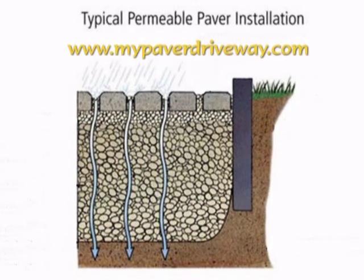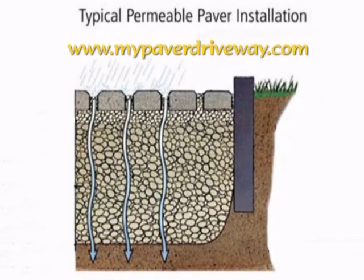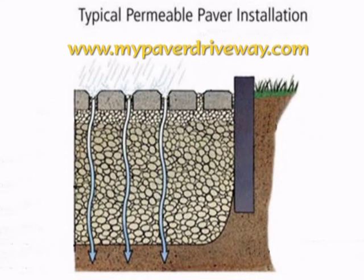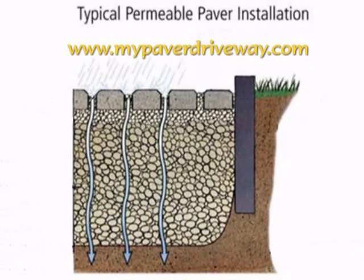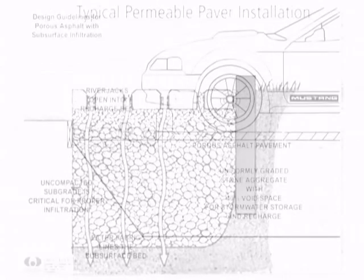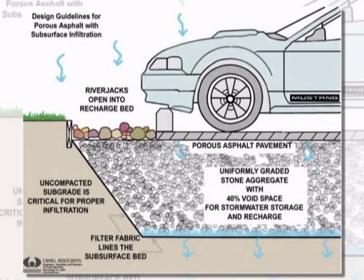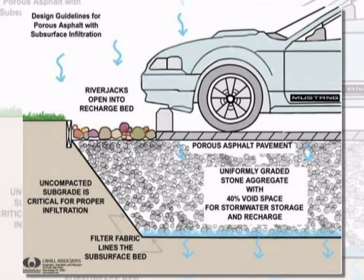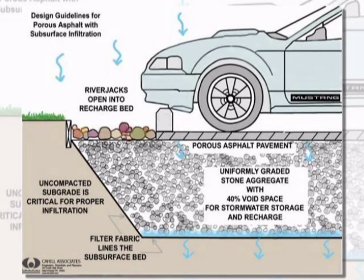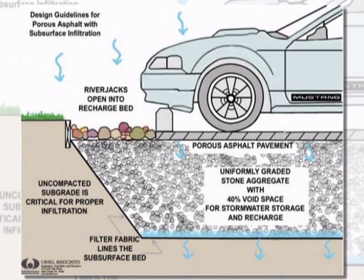In contrast to traditional paving, permeable or porous pavements allow water to pass through the pavement and soak into the soil below. Porous pavements are usually installed over a gravel base that serves as a water storage area. The water passes through the porous paving, into the gravel, and then drains into the underlying soil. In some places, an underdrained pipe system is included to handle excessive rainfall.